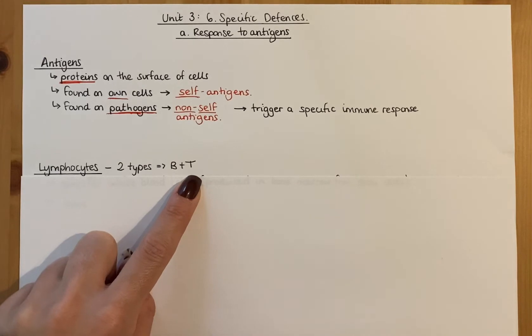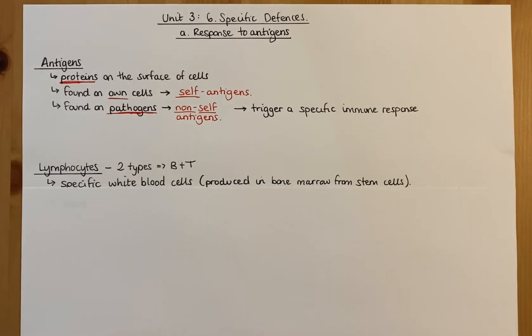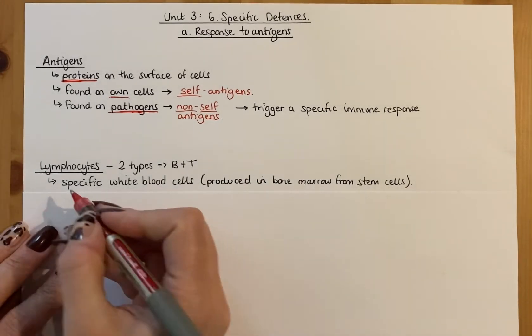Now this video is not going to delve into those two types. I'm going to have a separate video for each of them after this. But what I want to do is just generally describe what lymphocytes are and what they do. So they are specific white blood cells.